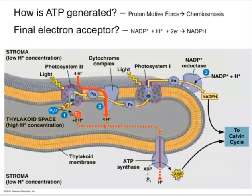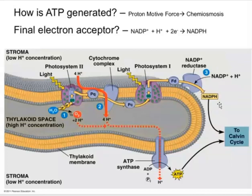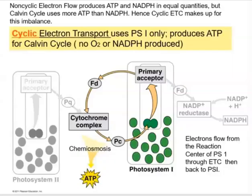We need ATP to power the Calvin cycle. At the end of the ETC, when electrons arrive at photosystem 1, light re-energizes them and they are passed down to NADP+. NADP+ is the electron acceptor molecule; NADPH is the electron carrier. NADPH has a higher energy level, and that's why we use it to power the Calvin cycle as well.